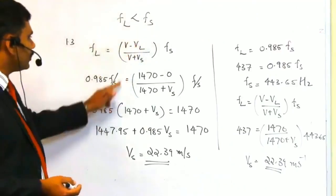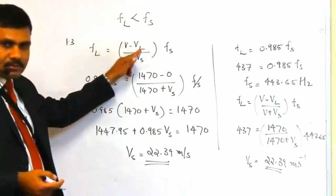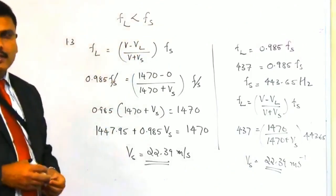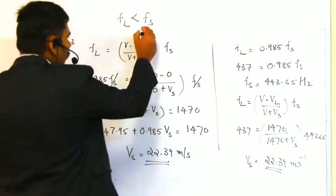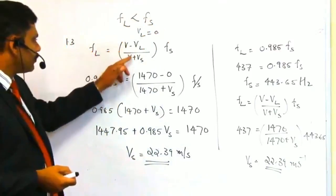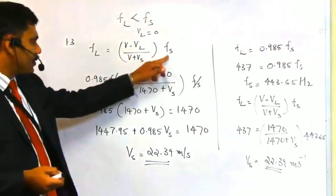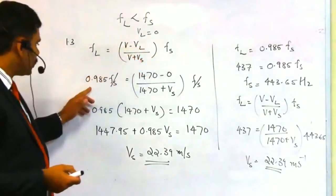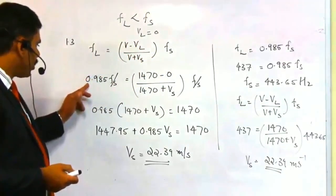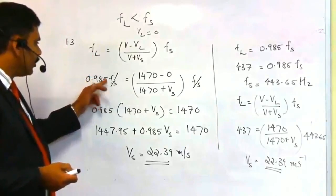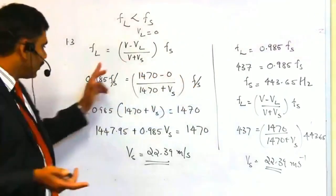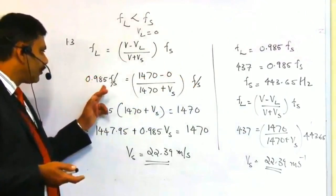The velocity of the listener is the velocity of the submarine. From the question it is clear the submarine is at rest, so VL equals zero. Our equation becomes FL = (V − 0) / (V + Vs) × Fs. The frequency detected by the submarine is 0.985 times the frequency produced by the ship, so FL = 0.985 Fs.